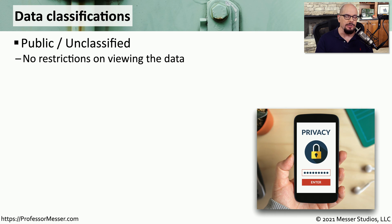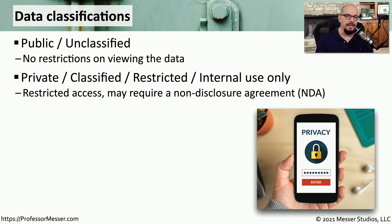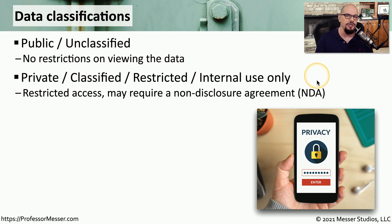We often put labels on data. These classifications can take many different forms, but here are some of the most popular. We can identify data as public data, or what you might call unclassified data, which means that anyone would have access to this information. If there's data that is restricted or should only be shown to certain individuals, we may label this data as private, classified, restricted, internal use only, or any other classification that shows that this data should remain private.